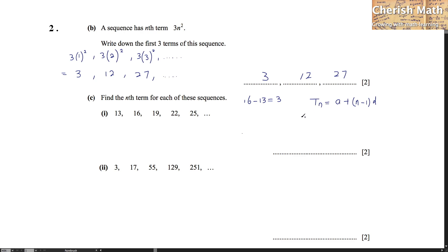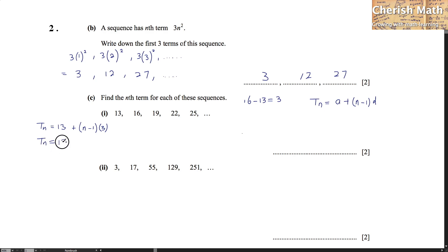We're going to substitute: a is 1 and the term-to-term rule d is 3. After substituting and simplifying, the final answer is 3n plus 10.